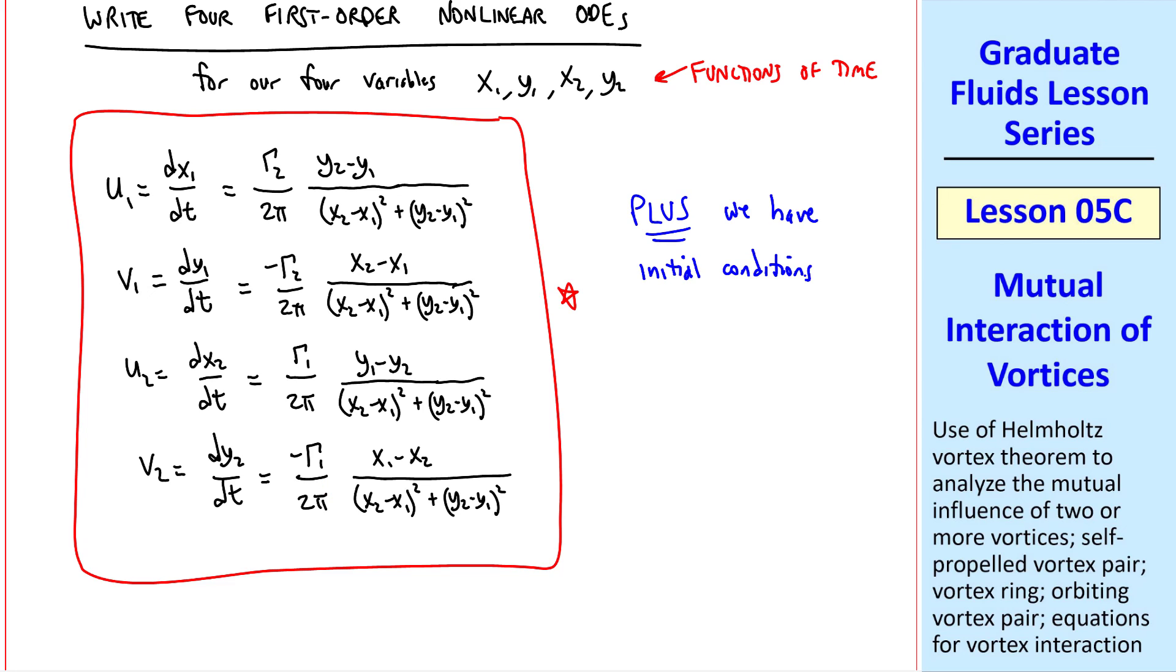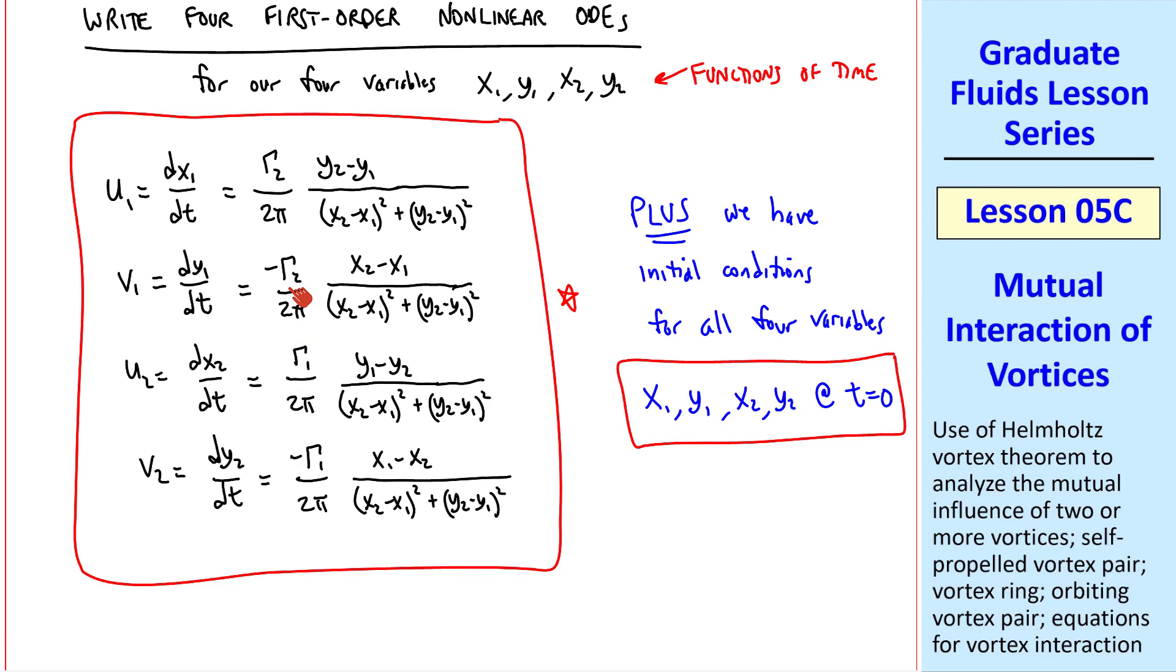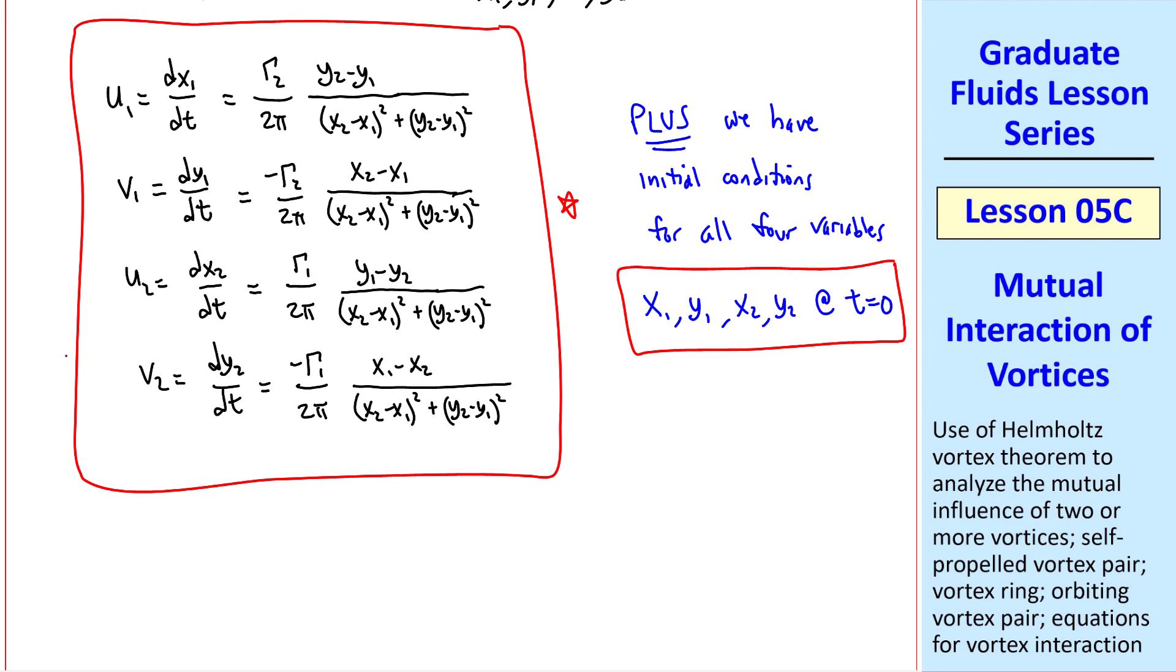Plus, we have the initial conditions for all four variables, namely x_1, y_1, x_2, and y_2 at our starting time, where we can put these two vortices anywhere we want, and we can assign any two gammas, positive or negative.